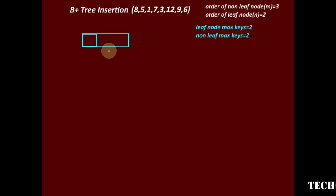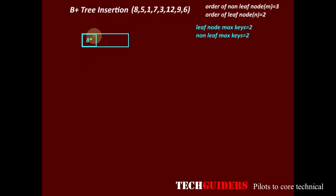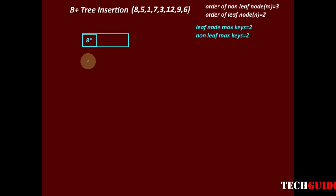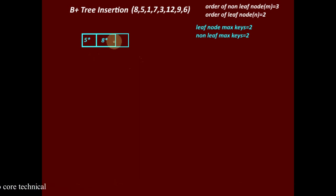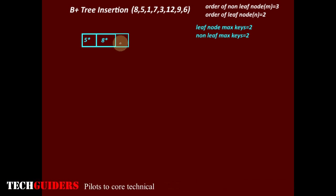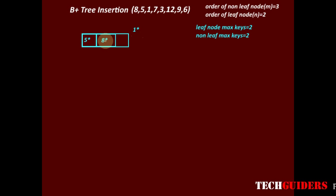In the beginning, the root node is the only node, so the root node itself is the leaf node. We insert key 8 along with its data record pointer into this leaf node. To insert the next key 5 along with its data record pointer, key 5 should occupy a position before 8 because in a B+ tree all keys in every node are sorted. This leaf node can keep a maximum of 2 keys along with their data pointers, plus a node pointer pointing to the next leaf node.